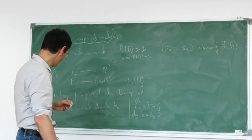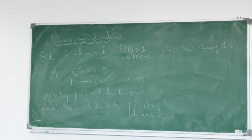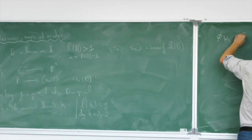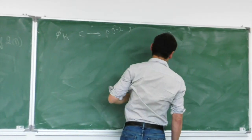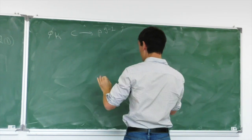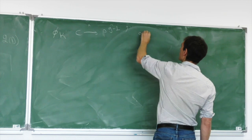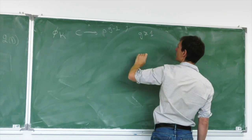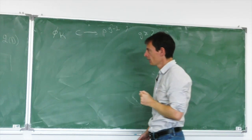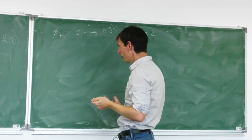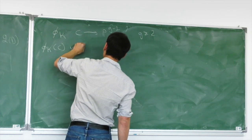The canonical divisor κ has the property that L(κ) equals the genus g of the curve, and the degree of κ is 2g − 2. What can we say about the map φ_κ from C to P^{g−1}? It is interesting only when g is at least 2. The first thing to note is that the image φ_κ(C) is non-degenerate.